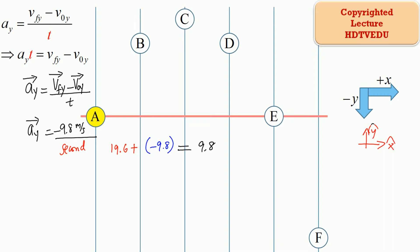That equals 9.8 meters per second. Acceleration due to gravity is how much your vertical velocity component is going to change — it changes by negative 9.8 every second. So what happens in the next second? Our velocity is now 9.8, so 9.8 plus negative 9.8 is zero.